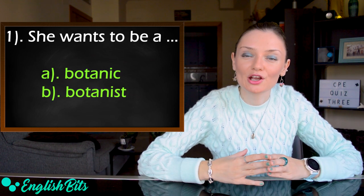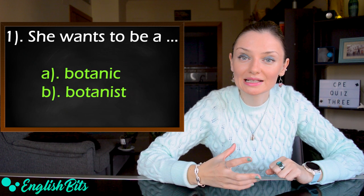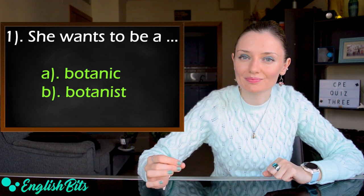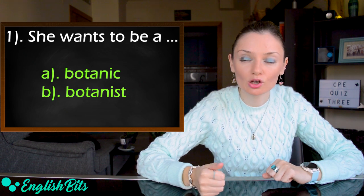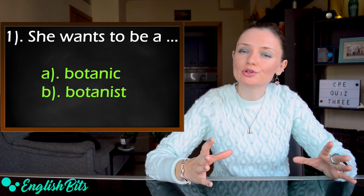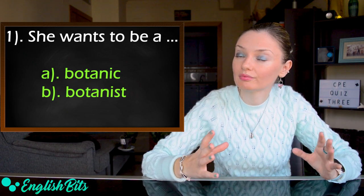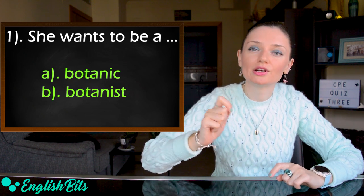The first sentence, she wants to be an option A botanic or option B botanist. Choose the correct answer A or B. And super important, write it down.